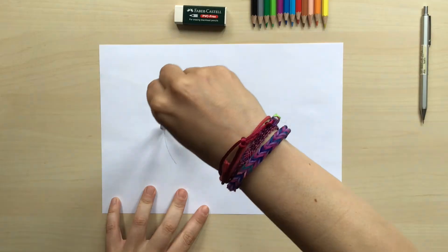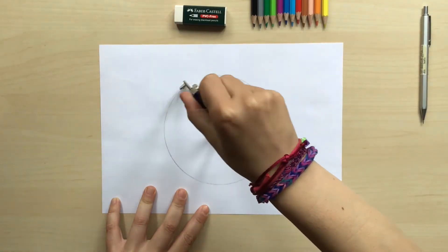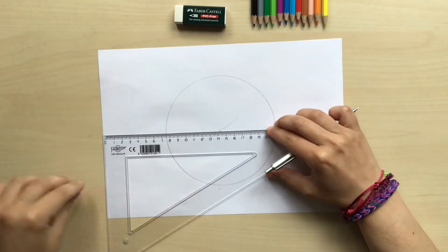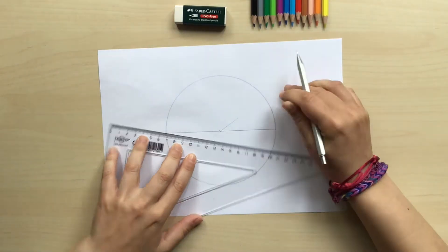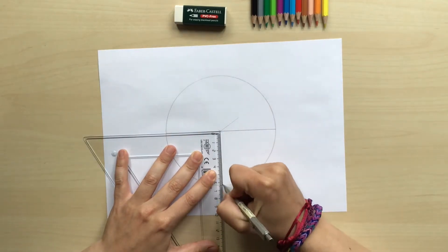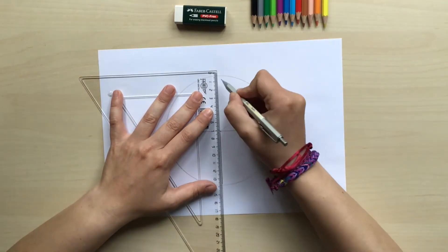Now I'm gonna grab my compass, I'm gonna put the needle on that point and I'm gonna draw a circle. After that I'm gonna trace the two diameters of the circle. I'm gonna use the set square because it has a 90 degree angle and that's gonna make it easier to create two perpendicular lines.